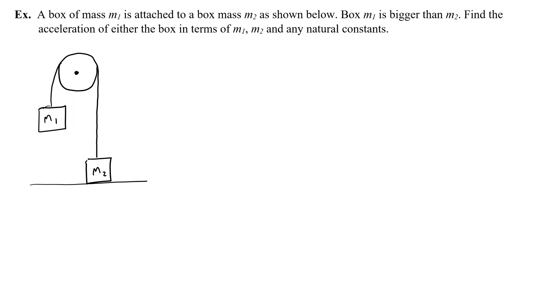This is usually how the AP test phrases the free response question. Find the acceleration in terms of - what that means is your final answer should be A, the acceleration equals, and then something on the right hand side that has m1, m2, and then any natural constants in some sort of mathematical arrangement. For us the natural constant that's relevant is G, or the acceleration due to gravity which we would normally say is 10 meters per second squared or 9.8 if we're being more exact. So really this sentence is asking you to find A with m1, m2, and G as the only things on the right hand side.